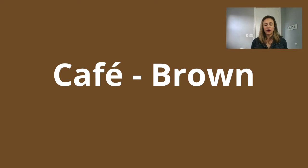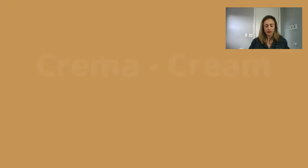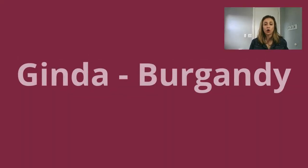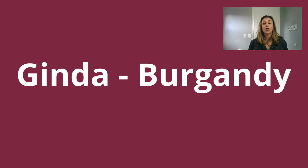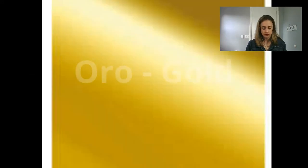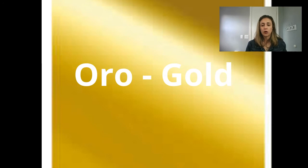Now, some other colors that are very, very common in Spanish: el color crema, which is cream. Another one is el color guinda, which is burgundy. El color mostaza, which is kind of mustard color. We also use el color metálico — that would be silver. And el color oro — that would be gold.